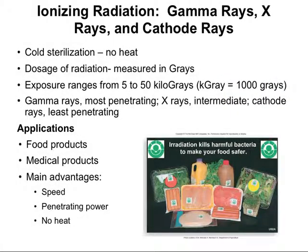Over recent years, ionizing radiation has become much safer and more economical to use, so its applications have expanded hugely. Irradiation is a cold sterilization technique — that is, it requires no heat — so it can be very useful for applications where heat might cause damage. We accomplish the radiation by using gamma ray machines, x-ray machines, or cathode ray machines. The product is irradiated for a short time at a carefully chosen dosage.